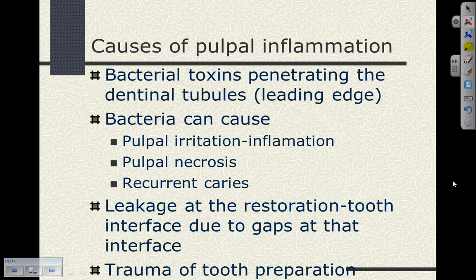What causes pulp inflammation? Pulp inflammation can be caused by bacterial toxins penetrating the dentinal tubules — meaning the carious lesion has penetrated through the enamel and gotten to the DEJ. The bacteria has a leading edge of toxins and acids penetrating the tubules, causing pulp irritation and inflammation. Long-standing irritation and inflammation can lead to irreversible pulpitis and pulp necrosis. Bacteria at the margins of a cavity preparation can cause recurrent caries.